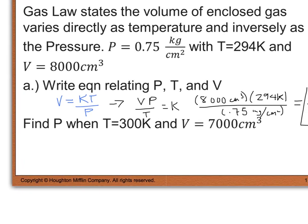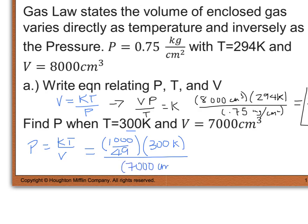So now for the second part where it says find P when T equals 300 and V equals 7,000, I can now go in and rearrange my equation for P. So P is equal to kT divided by V. And we just solved for k, k was 1,000 divided by 49. We're going to multiply that by our temperature, which they gave us at 300 kelvin, and we're going to divide that by our volume, which is 7,000 cubic centimeters. And we find that our pressure, on my calculator I got 300 divided by 343, but as a decimal, that's approximately 0.87 kilograms per square centimeter.